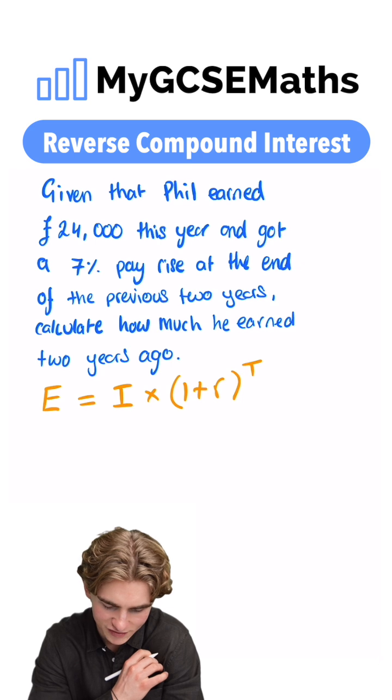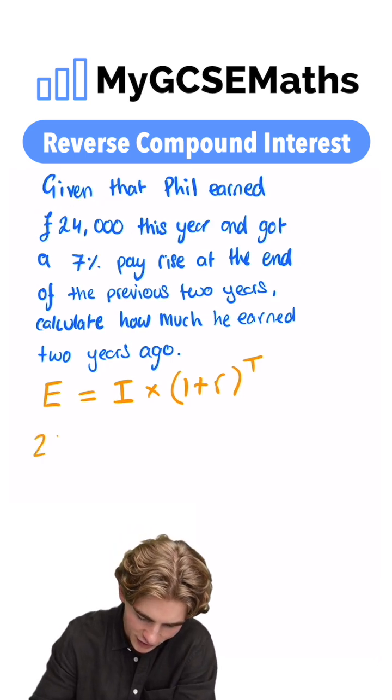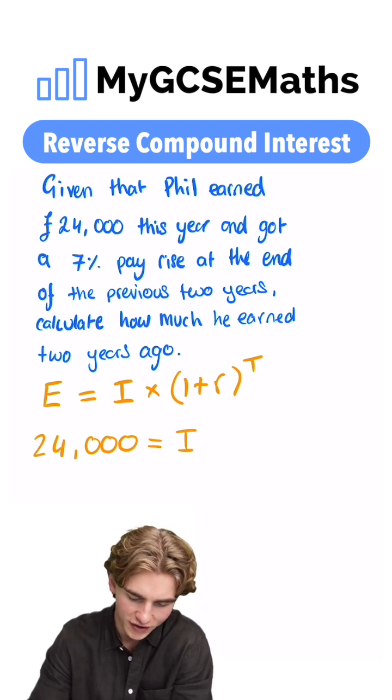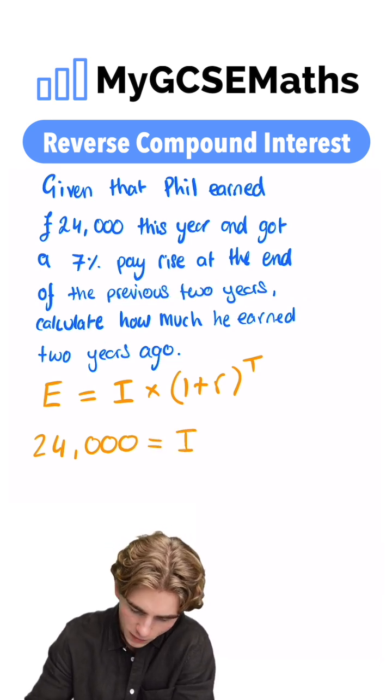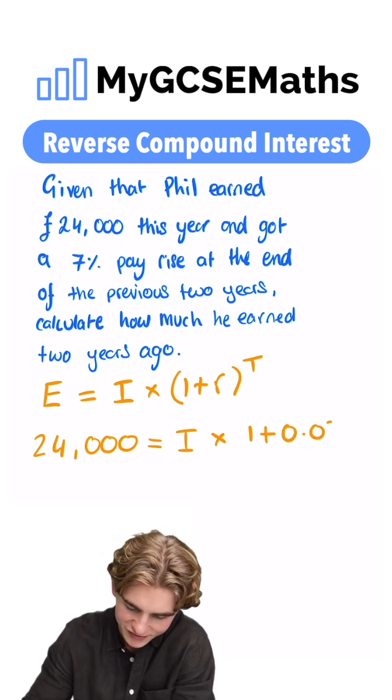Let's fill in our information and see what we have. We've got our end amount 24,000. So we have 24,000 and that's equal to our initial amount, which we're trying to work out, the amount two years ago, multiplied by one plus our interest rate as a decimal. 7% as a decimal divided by a hundred is going to be 0.07.